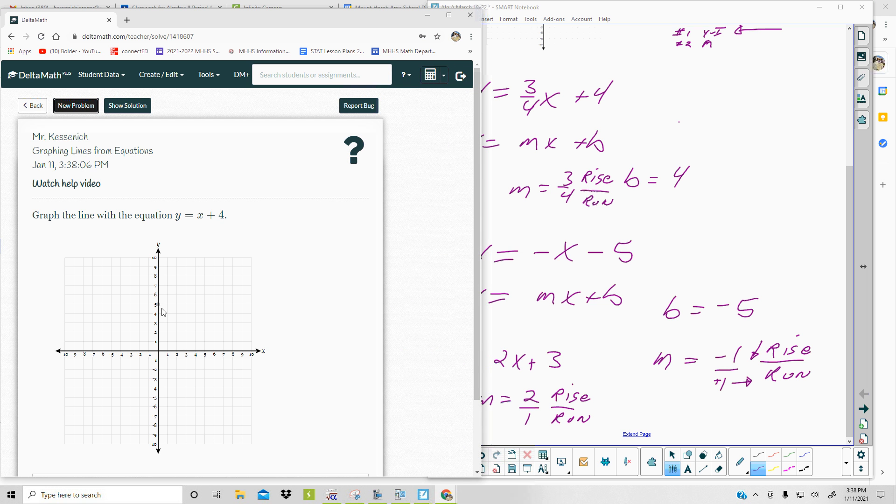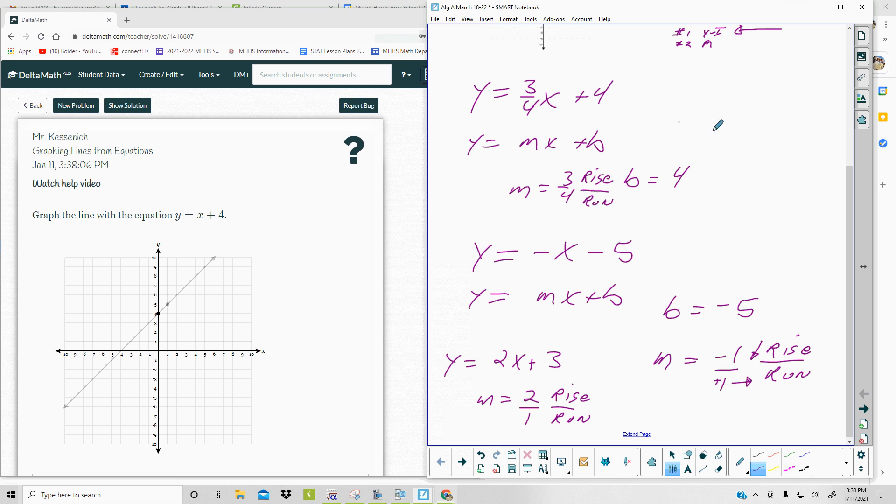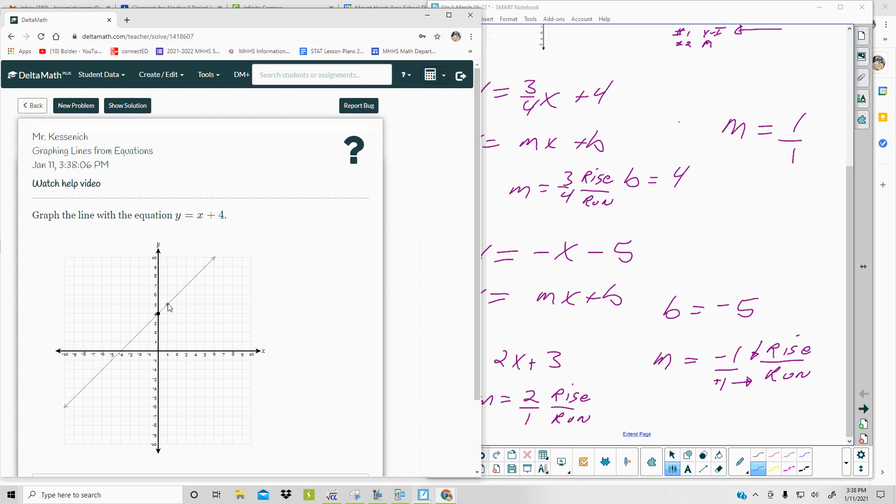Y-intercept is 4, slope is 1. So you go up 1, over 1. If your slope is 1, I can always write a whole number over 1, so you rise 1, run 1. There it is.